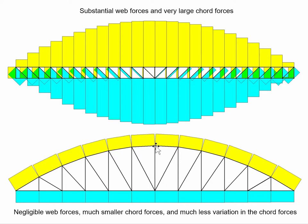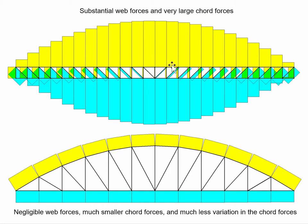The cord forces in the bow truss are substantially smaller than in the parallel cord truss, and this is a simple lever arm argument. The lever arm for the parallel cord truss is from there to there; the lever arm for the bow truss is from there to there. Also notice the extreme variability in the cord forces for the parallel cord truss — they are essentially varying parabolically, with incremental jumps associated with force transfer at the joints. This is a parabolic shape, and the moment is being accommodated by this variable force because the lever arm for this bow truss is the same all along the length. So we're accommodating the variable moment with a variable cord force, top and bottom.